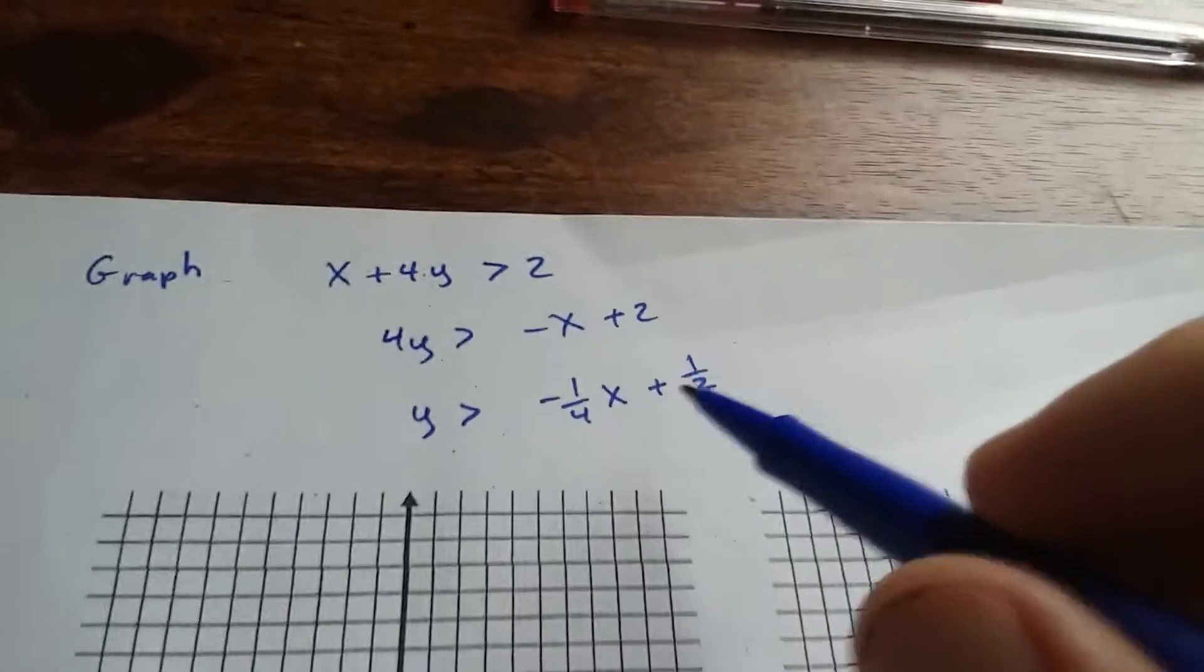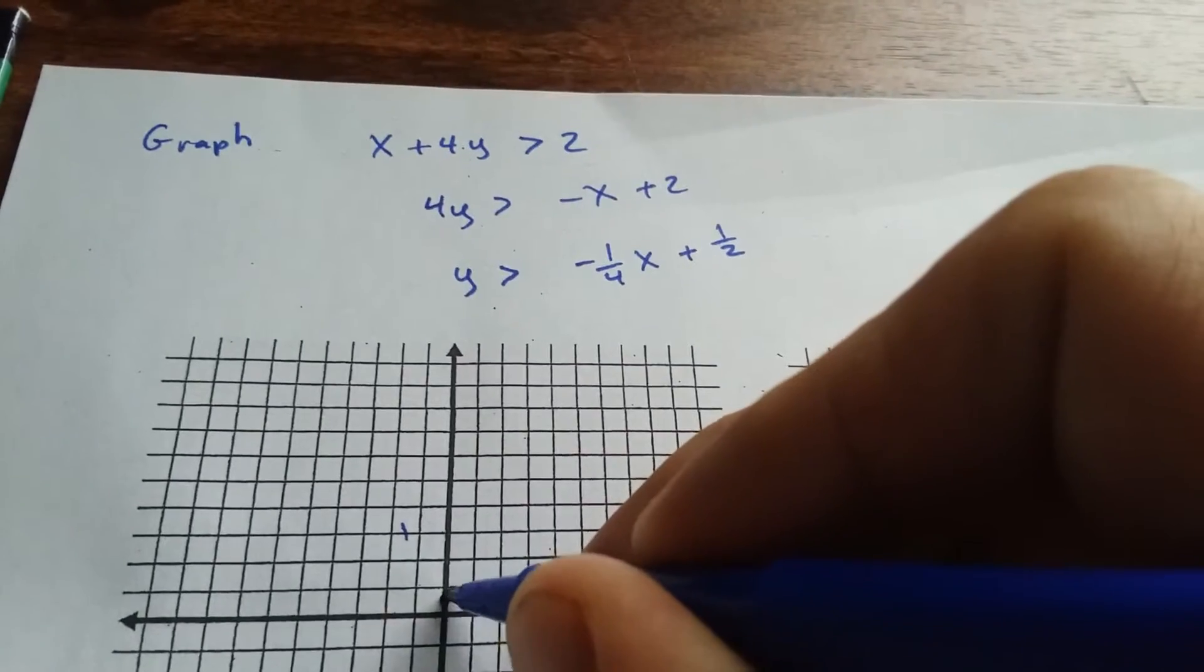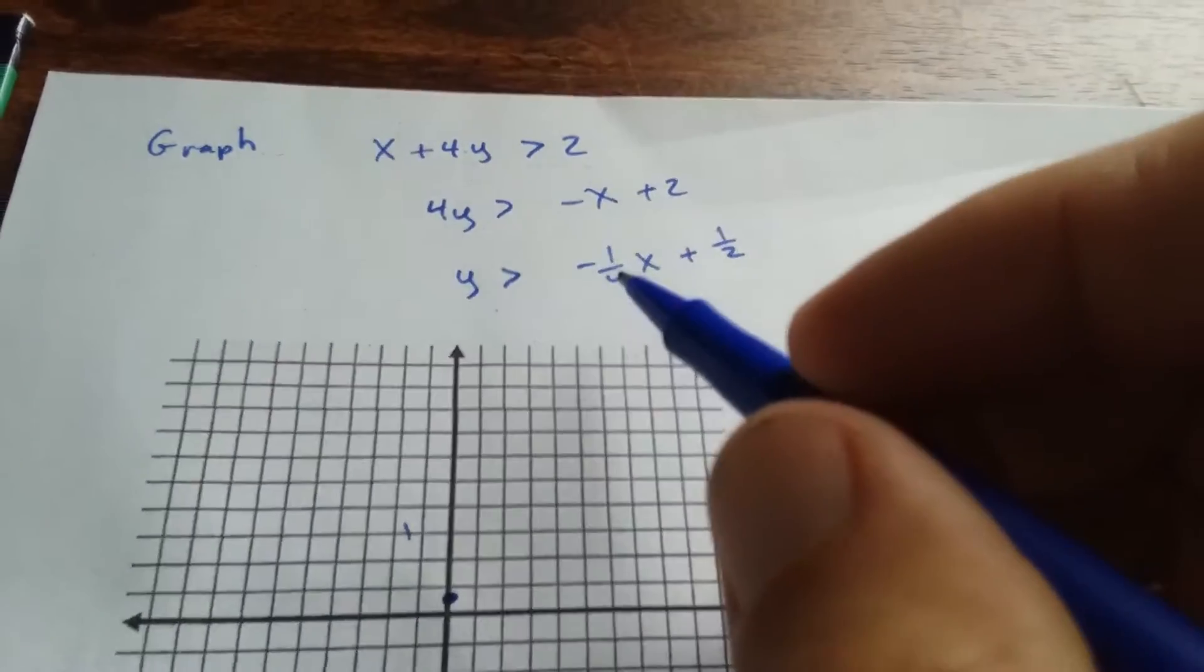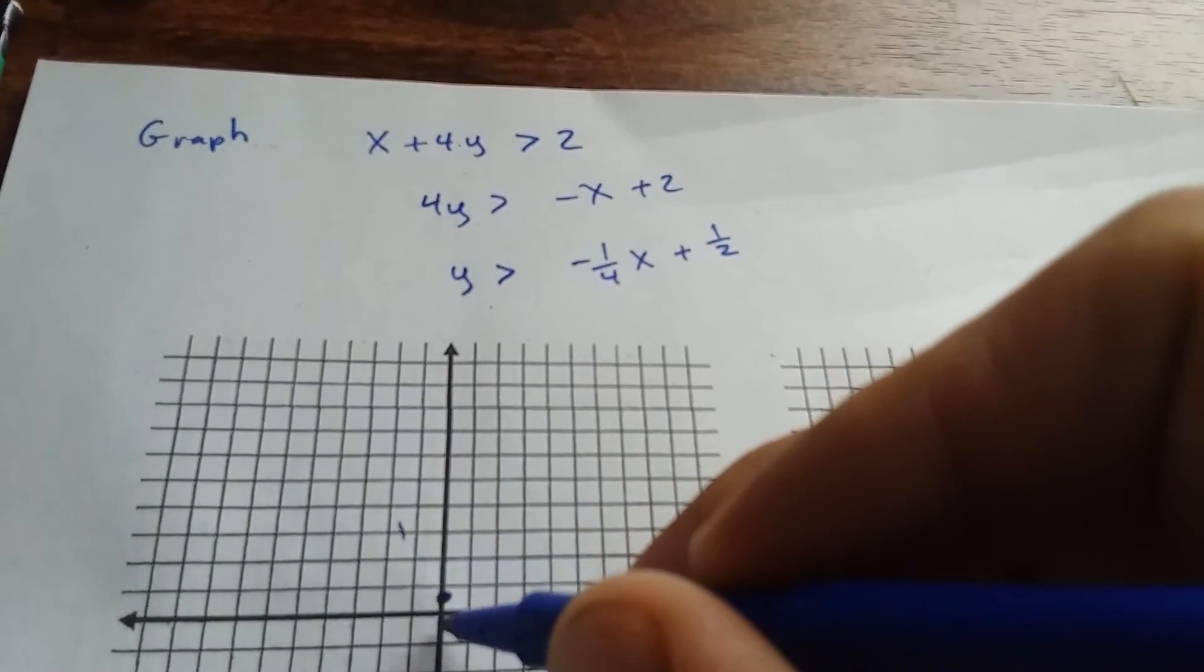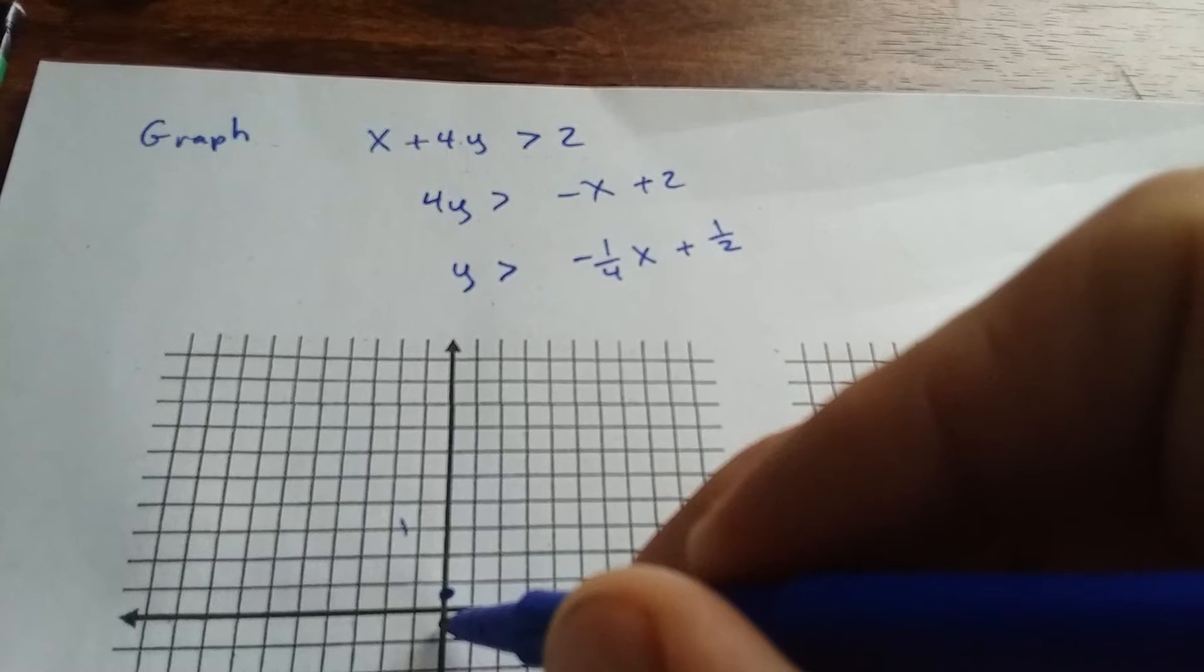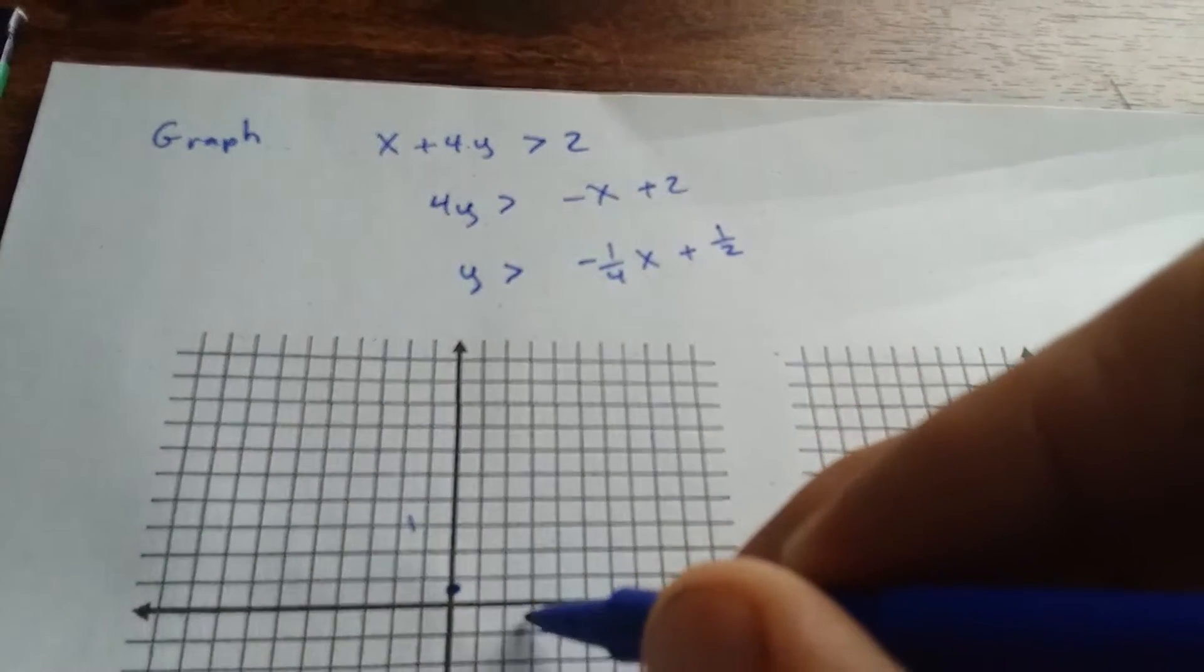Okay, so your intercept is 1/2, so that's right here. Your slope is negative 1/4, so that means you're going to go down 1 over 4. So you go down 1, so I go down halfway between 0 and negative 1, and then over 1, 2, 3, 4.